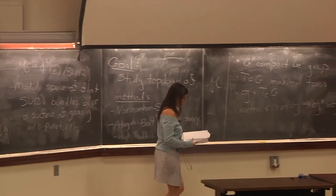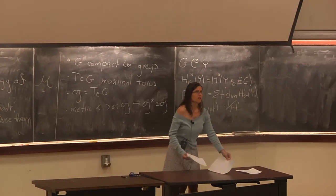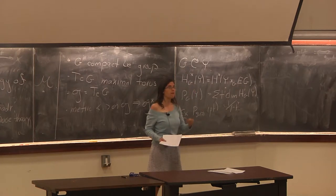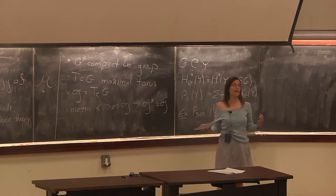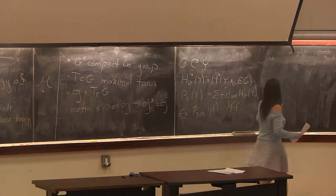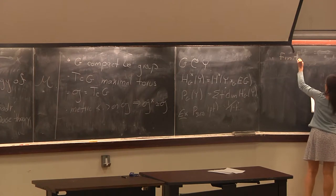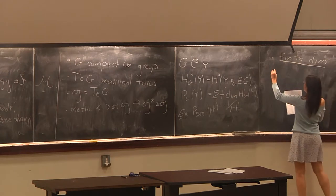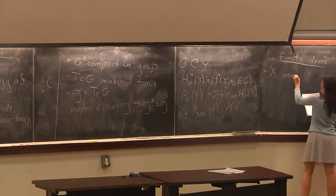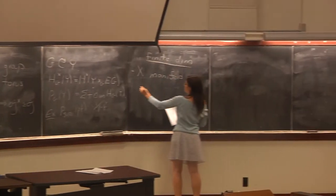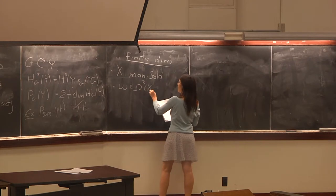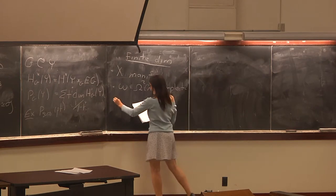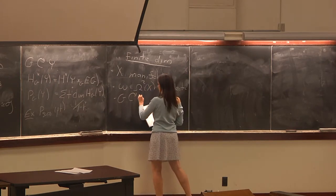That was just a little background. I want to briefly review what happens in the finite dimensional case, and then our goal is to extend this to the infinite dimensional case. We start with X as a manifold, and we're going to have a two-form on this which is symplectic. We have G acting on X, preserving omega.